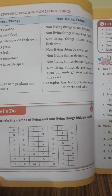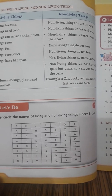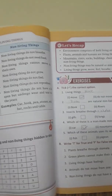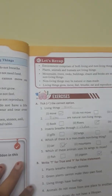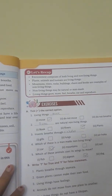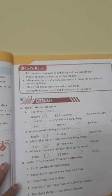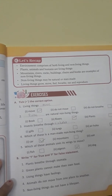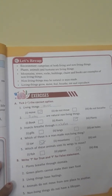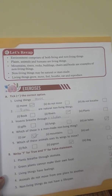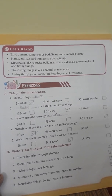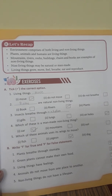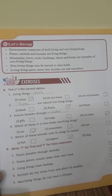Now let's recap — you can tick all the points. The environment comprises both living and non-living things. Plants, animals, and humans are living things. Mountains, rivers, rocks, buildings, chairs, and books are examples of non-living things. Non-living things may be natural or man-made. Living things grow, move, feel, breathe, eat, and reproduce.